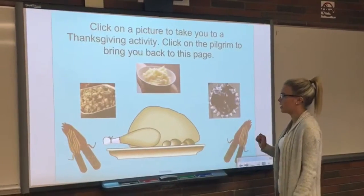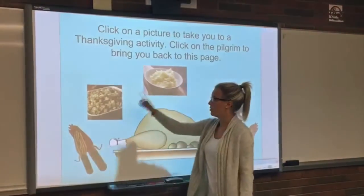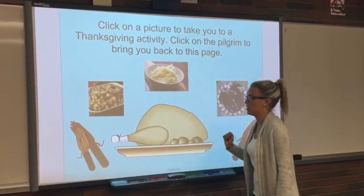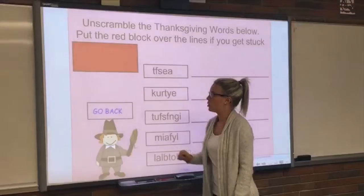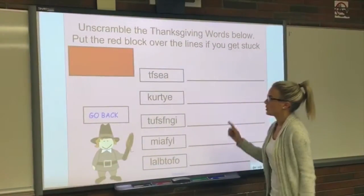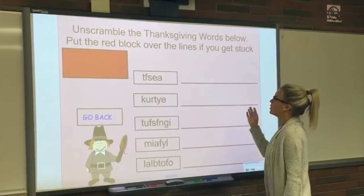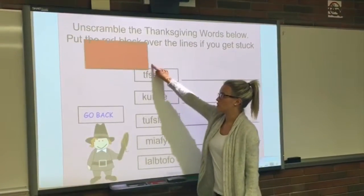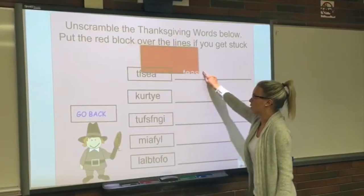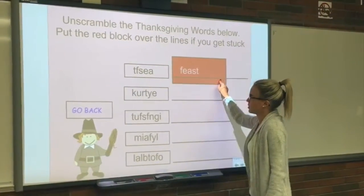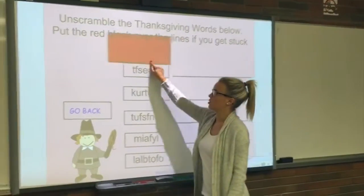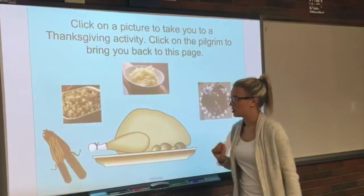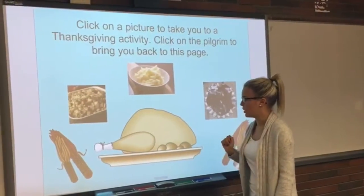On this slide, students are able to click on one of the different photos and it'll take them to an activity. The corn photo takes them to an unscramble activity. They can check their answers by sliding the red box over to the line, and by clicking back it brings them back to the photo page.